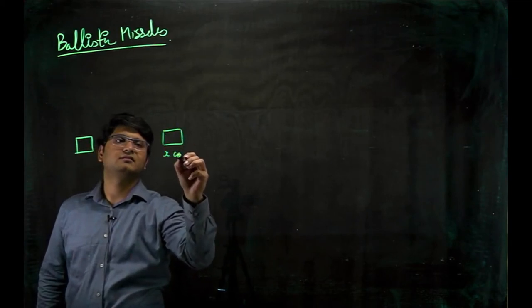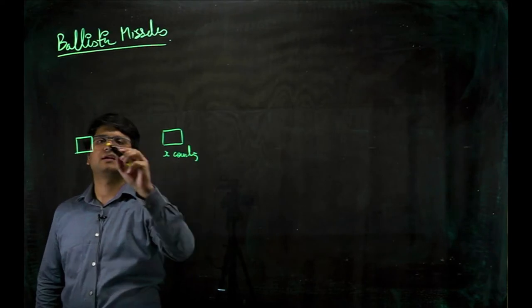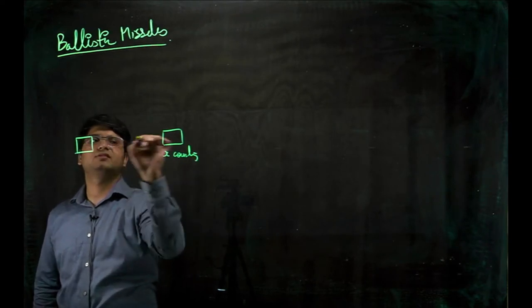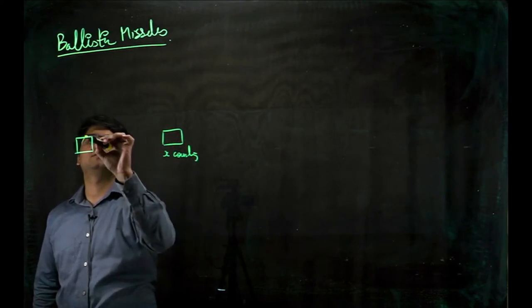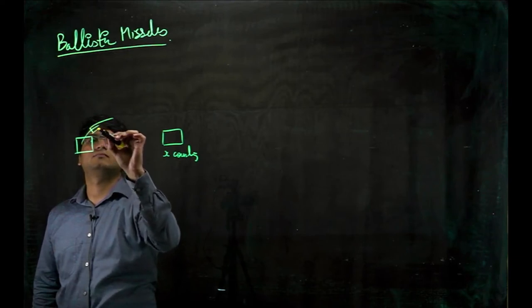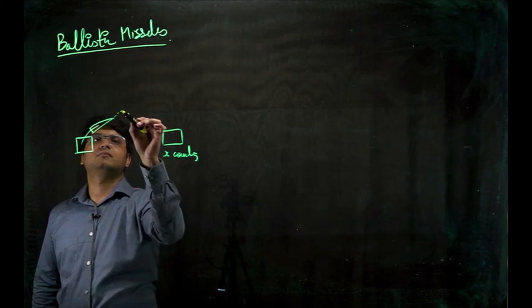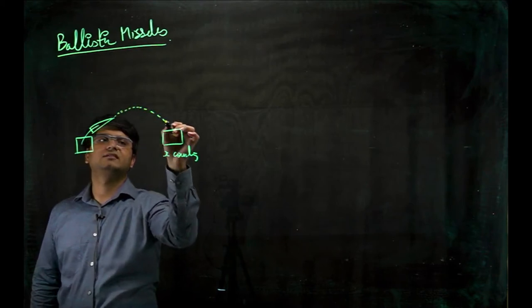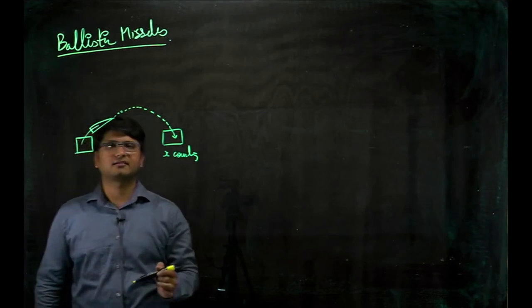This is the surface. Let's say X country. India wants to fire a missile to this country. So it fires a missile. It follows the trajectory and then lands in X country.